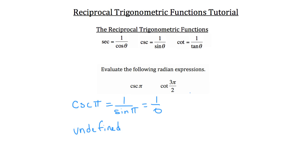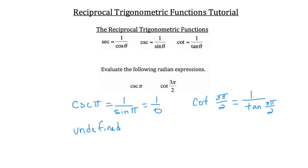Now let's evaluate the cotangent of 3 pi over 2. Cotangent is 1 over the tangent of 3 pi over 2. On the unit circle, 3 pi over 2 is 270 degrees — straight down on the y-axis, with coordinates (0, negative 1). Tangent is sine divided by cosine, so we'd be dividing negative 1 by 0, which is undefined. So cotangent of 3 pi over 2 is also undefined.